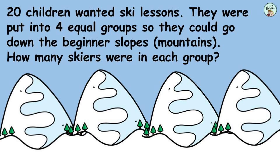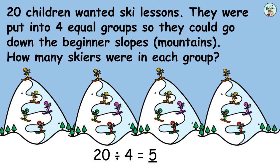It's time for our skiing lessons. Let's go learn how to ski — I hope I don't fall down a lot. Twenty children wanted ski lessons. They were put into four equal groups so they could go down the beginner slopes or the mountains. How many skiers were in each group? Simply draw a picture to match the word problem: I have 20 children in all, four equal groups with four mountains, and you can see that we have five skiers on each slope. Great job, boys and girls — twenty divided by four equals five.